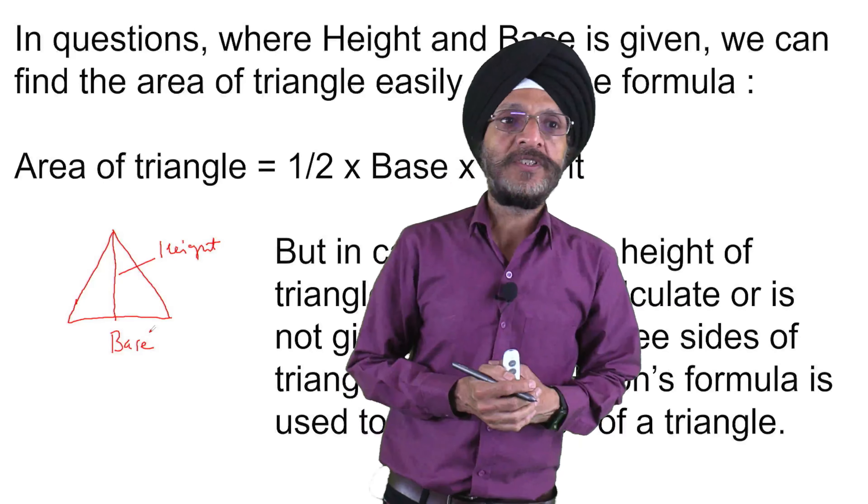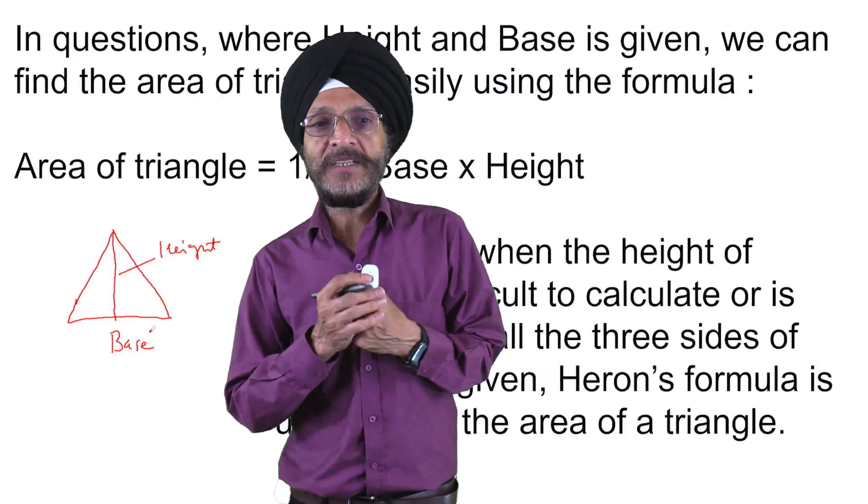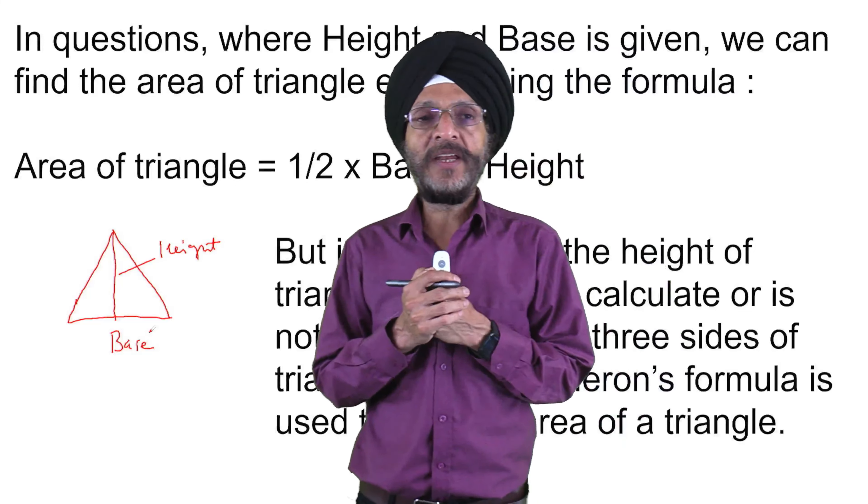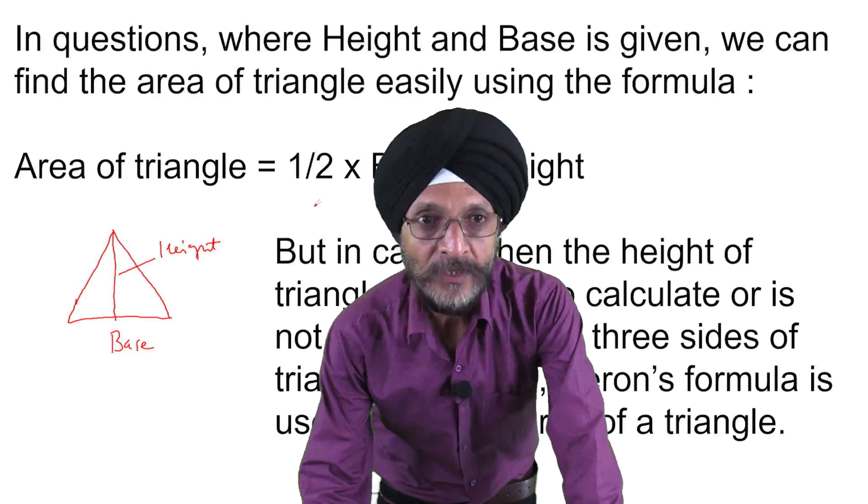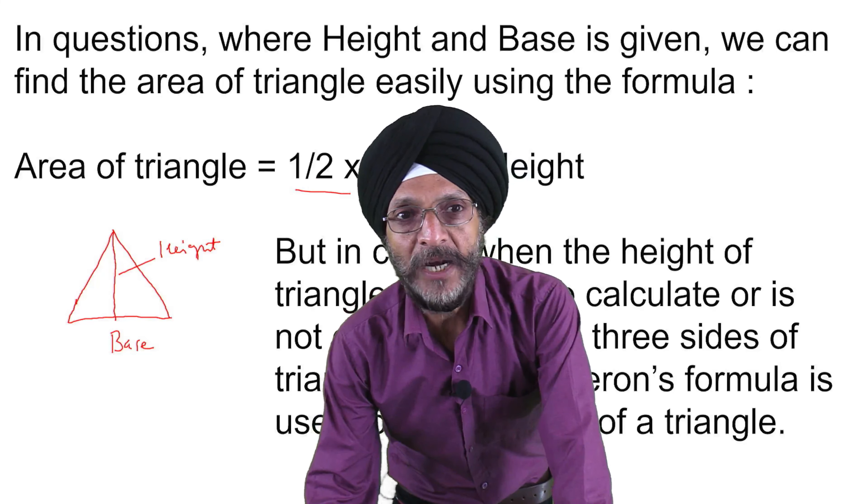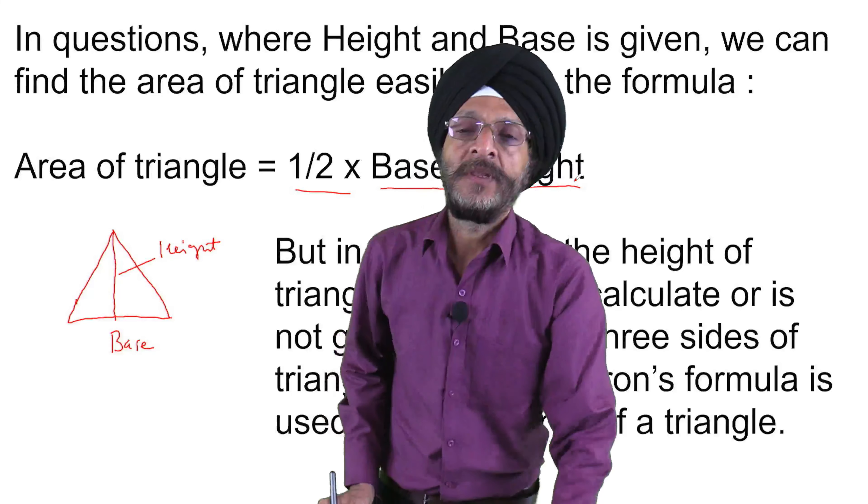In case of those triangles where height as well as base is given or known to us, we can calculate the area of triangle by using the formula 1/2 multiplied by base into height.